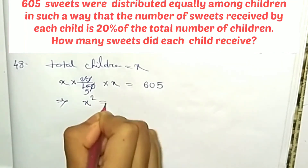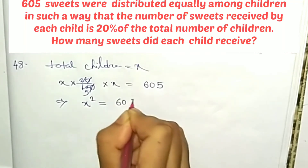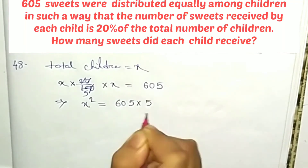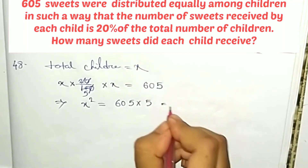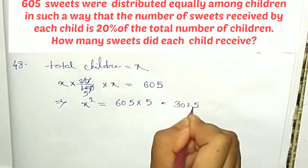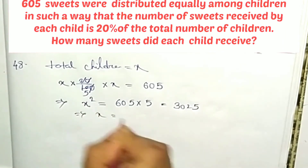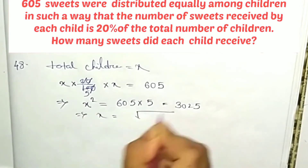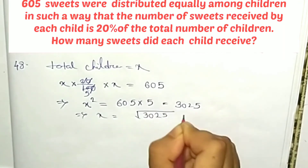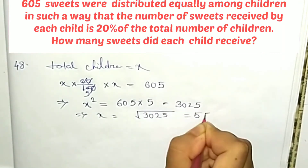So x squared is equal to 605 multiplied by 5, which equals 3025. Therefore x is equal to the square root of 3025, which equals 55. So each child received 55 sweets.